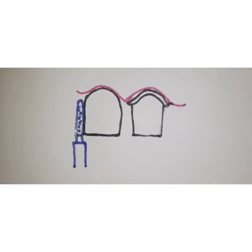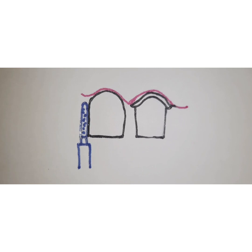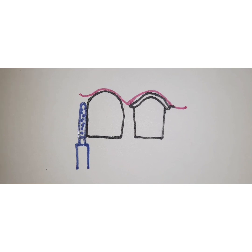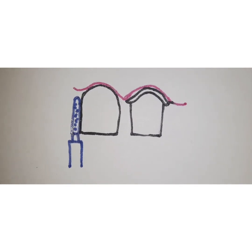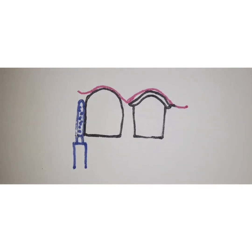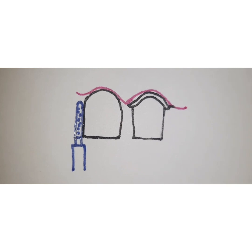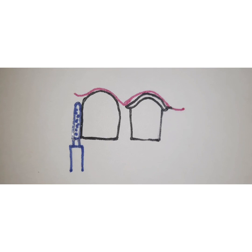Another criterion is it should be properly contoured, because if the finish line is not contoured well there are chances of an over-contoured or under-contoured margin of the crown. Thirdly, it should provide sufficient bulk for the restorative material, because if there is less material at the finish line there are chances of breakage or fracture. Fourthly, it should provide acceptable aesthetics and be well tolerated by the tissues.